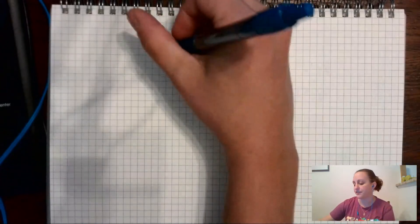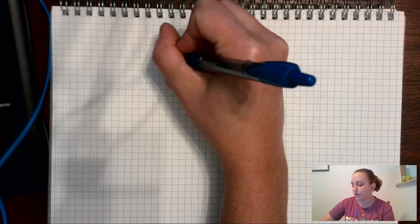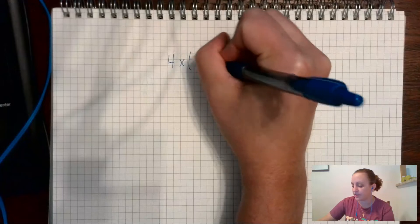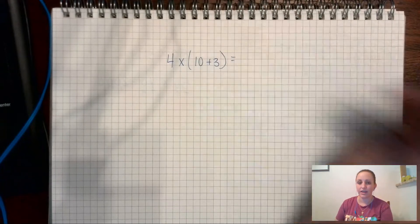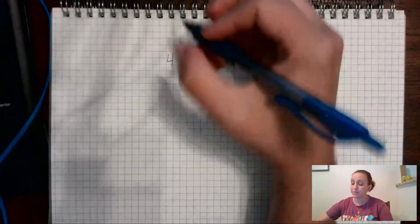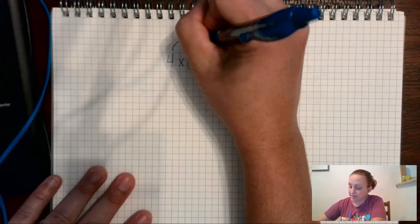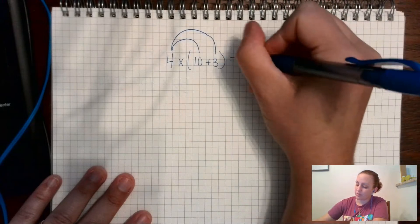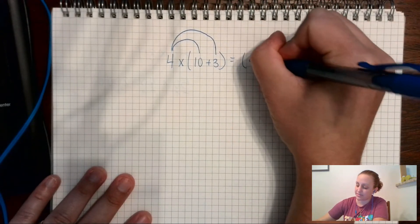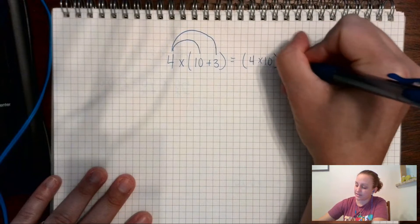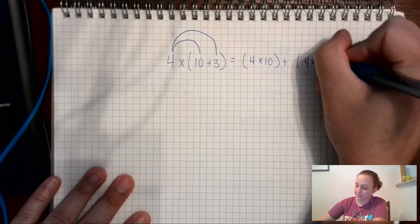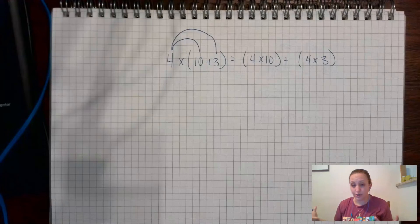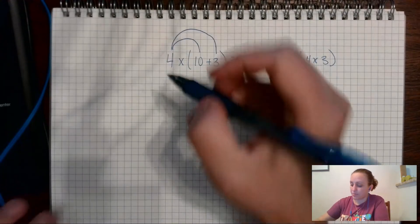This is using distributive property. Now the distributive property of multiplication says if I have 4 times, let's say, 10 plus 3, if I have 4 times 10 plus 3, I'm going to distribute that 4 times to the 10 and the 4 times to the 3. So I would have the same, it would be the same thing as saying 4 times 10 plus 4 times 3. That's what the distributive property is saying - that if you're multiplying, you're distributing it to everything that you're multiplying by that's in the parentheses.